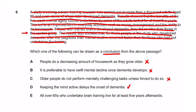D seems best so far, but let's check E: 'all over 65 who undertake brain training live for at least five years afterwards.' The only mention of '65 and over' in the passage was to describe the study participants — it didn't say anything about them living five years longer. So E is also incorrect. Through elimination, D is the correct answer. With this type of question, even without a clear opinionated sentence in the paragraph, it's quite evident which answer is correct because A, B, C, and E are clearly wrong.